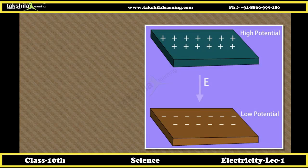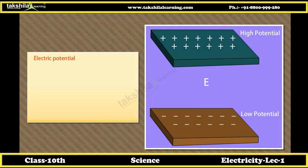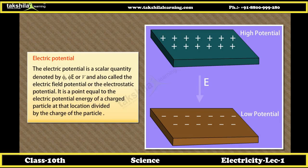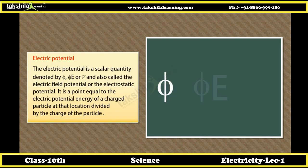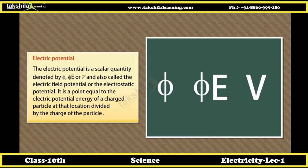Electric potential and potential difference. Electric potential is a scalar quantity denoted by E or V. It is defined as the electric potential energy of a charged particle at a location divided by the charge of the particle.